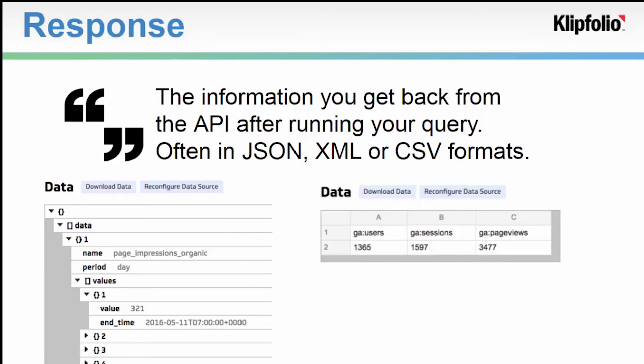And finally, the response. This is what the API returns after you query it. Data from APIs is often returned in JSON, XML, or CSV formats.